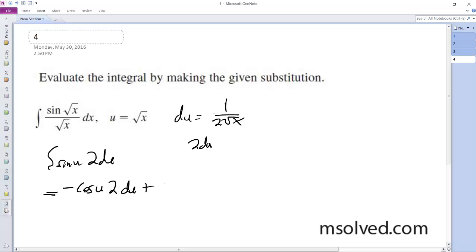And then subbing everything back in, plus C, we get basically negative 2 cosine u - oops - square root of x plus C, and that's it.